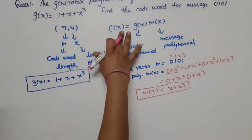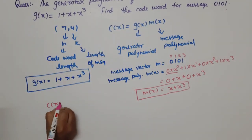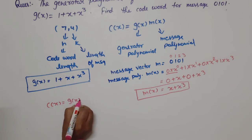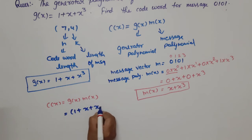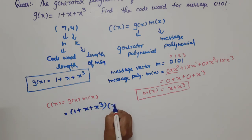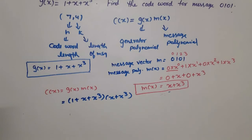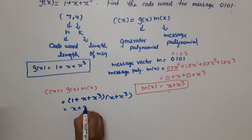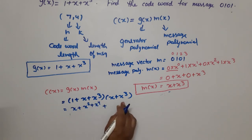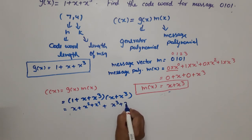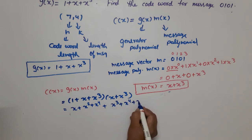We will now find C(x). Using the formula C(x) = g(x) · m(x), we substitute: C(x) = (1 + x + x³) · (x + x³). Multiplying x through: x + x² + x⁴. Multiplying x³ through: x³ + x⁴ + x⁶.